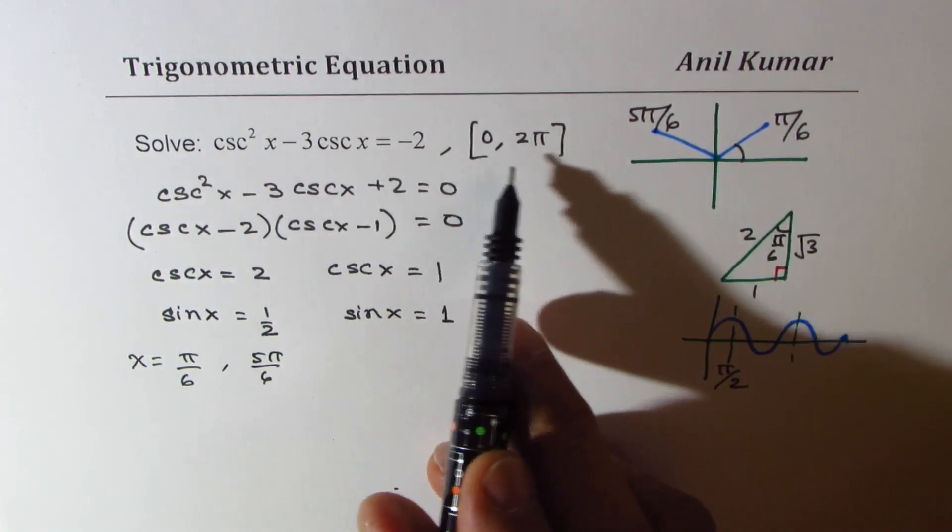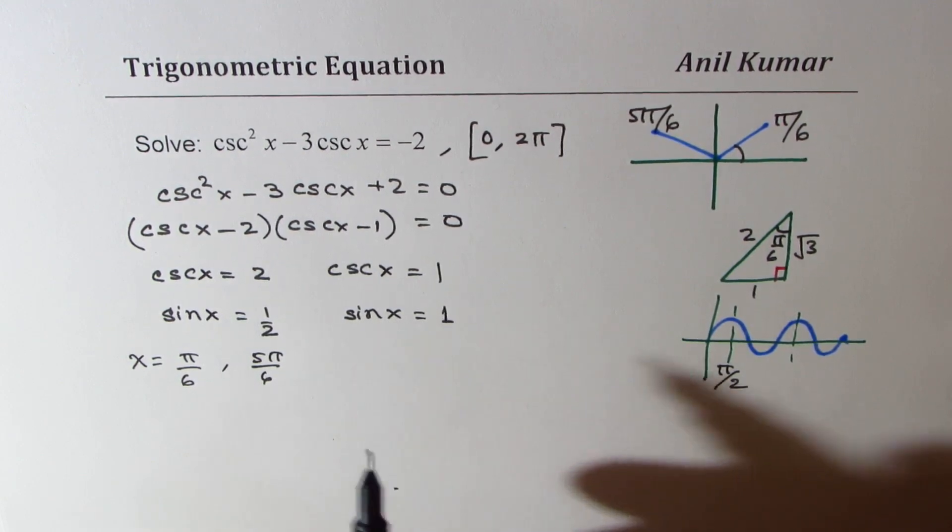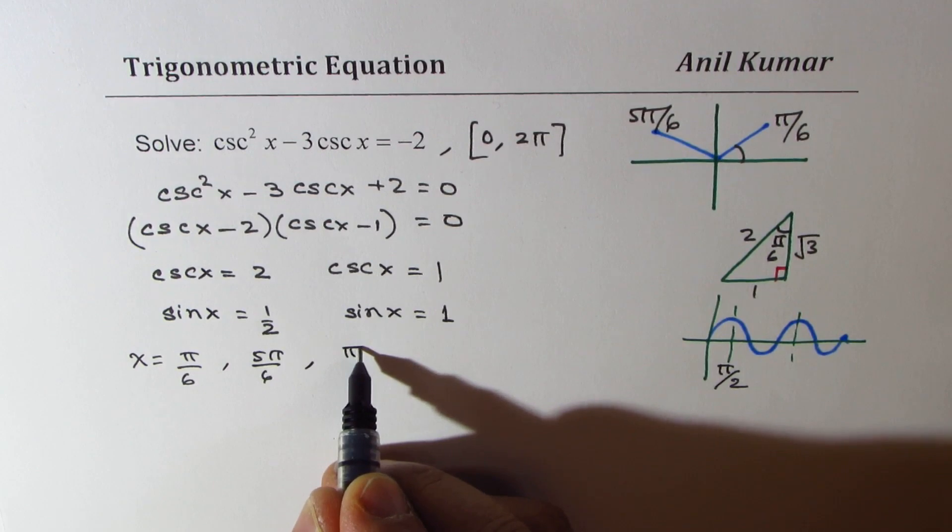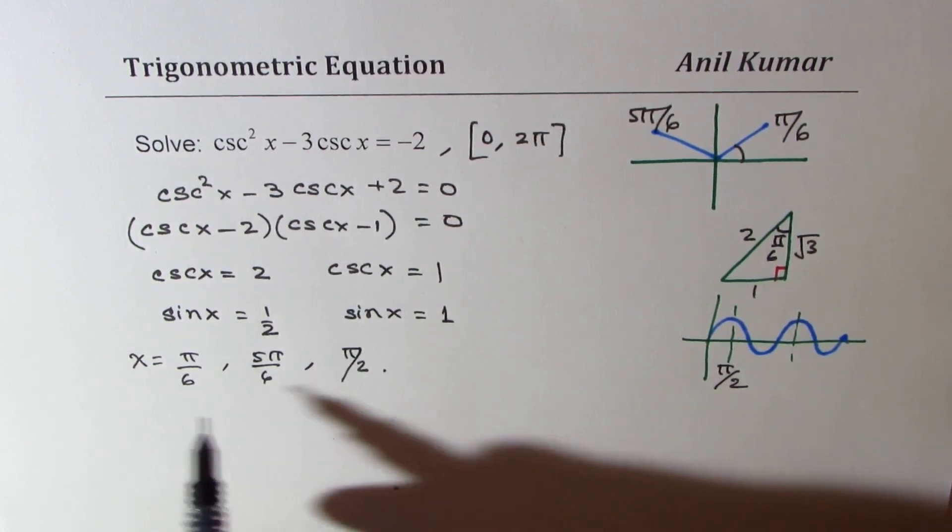So in the domain 0 to 2 pi, we are writing the solutions. For sine x equals 1, we get this as pi by 2. Well, if you want general solution...